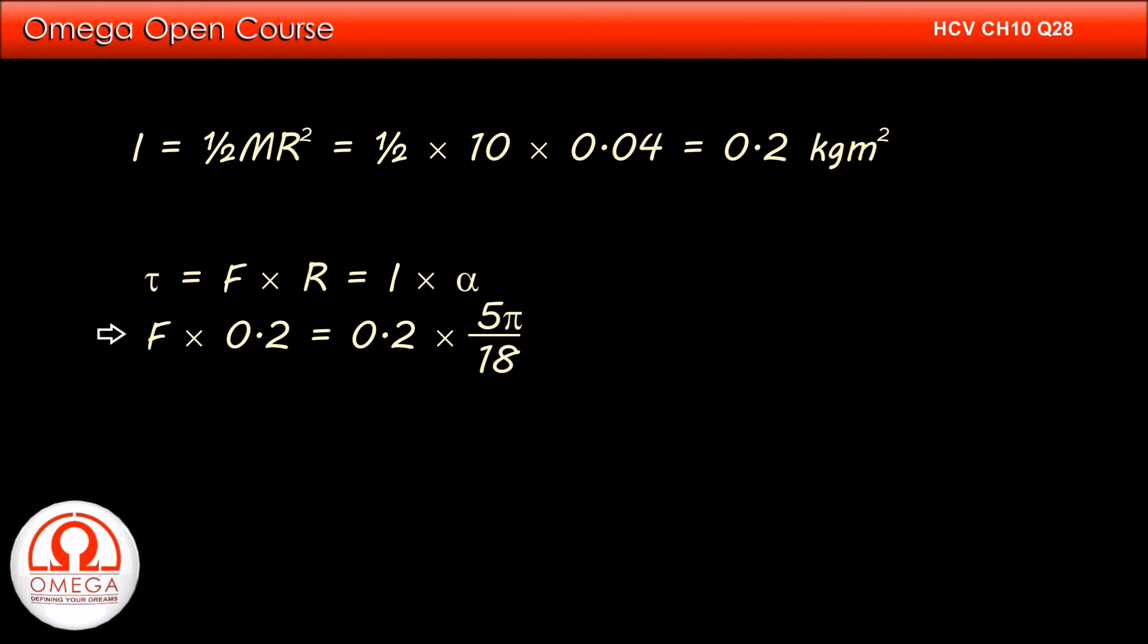This implies F times 0.2 must be equal to 0.2 times 5π/18. Simplifying, we get F equals 0.87 newtons. This is our answer.